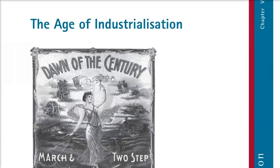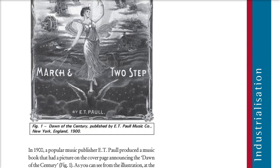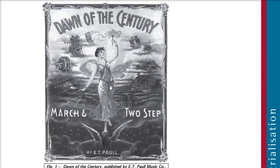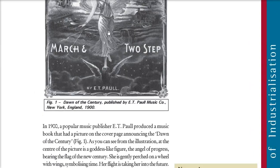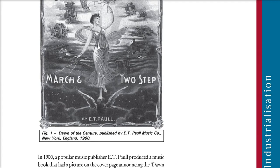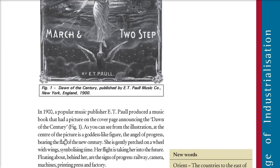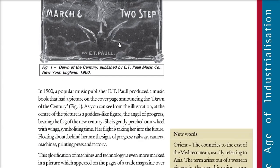First we have to understand what was going on in that period. This is a famous picture from 1900. A popular music publisher E.T. Paul produced a music book, and the cover page announces the dawn of the century. The picture shows a goddess-like figure — the Angel of Progress — bearing the flag of the century. She is on a winged wheel representing time, flying into a new era with signs of progress behind her: railway, camera, machines, printing press, and factories.